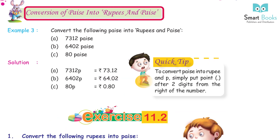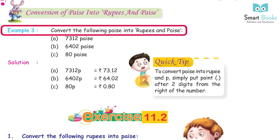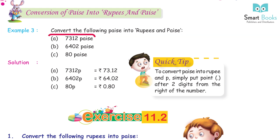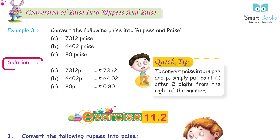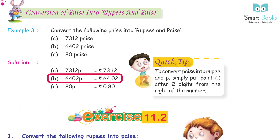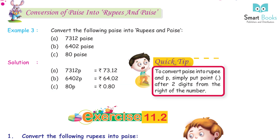Conversion of paise into rupees and paise. Example 3: a. 7312 paise = Rs. 73.12. b. 6402 paise = Rs. 64.02. c. 80 paise = Rs. 0.80. Quick tip: to convert paise into rupees and paise, simply put a point after two digits from the right of the number.